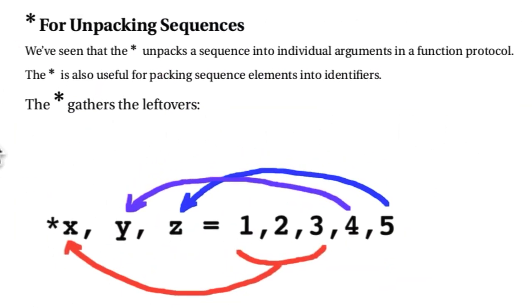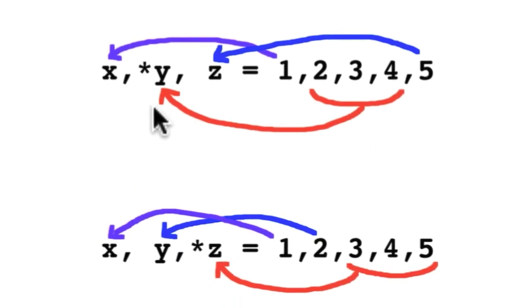The asterisk can also appear where there is no function call or function definition. If I have five items, we know I could put them into one identifier or I could put them into five identifiers. But I can also put them into any number of identifiers if one of the identifiers has an asterisk in it. These are the last two identifiers. So they will gather each of them, the four and the five, and all the leftovers go into the asterisk identifier. Here we see the same thing except for the Y. The middle identifier has the asterisk.